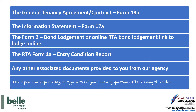You should have the following documents in front of you: the Form 18A, the General Tenancy Agreement Contract, the RTA Form 17A Information Statement. Bond information will be provided to you from our agency, including RTA lodgement links to lodge your bond online direct to the RTA, or the Form 2 bond lodgement. The RTA Form 1A Entry Condition Report will be provided to you on or before the day you take possession of the property — usually on the day you pick up the keys. Any other associated documents from our agency will also be included.